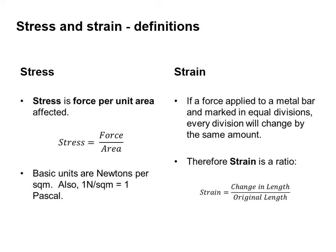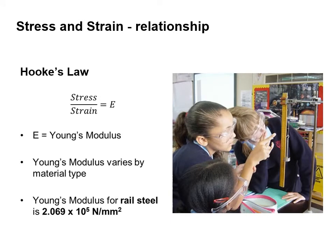Strain: if a force is applied to a metal bar marked in equal divisions, every division will change by the same amount. Therefore strain is a ratio, calculated as the change in length over the original length. The relationship between stress and strain is governed by Hooke's Law, where stress divided by strain equals Young's modulus. Young's modulus varies by material type, and for rail steel it is typically 2.069 × 10⁵ newtons per millimetre squared.